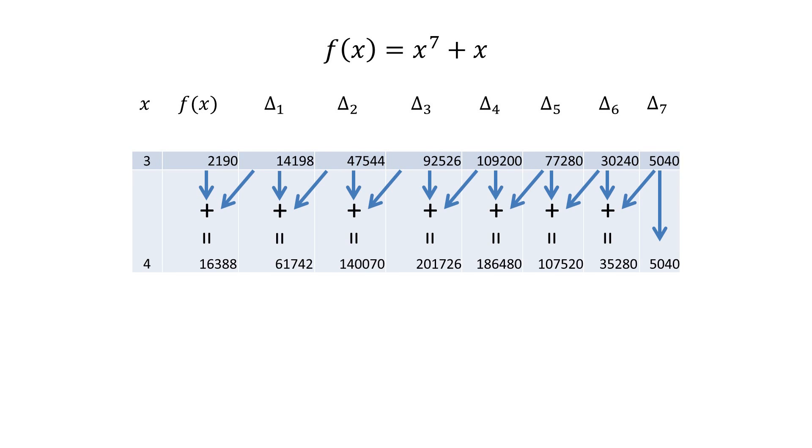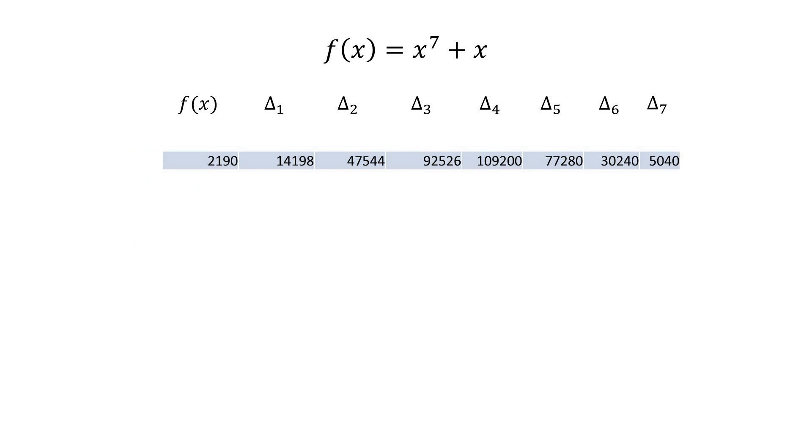And, if you order the calculation sequentially from left to right, you only need a single row of storage in your difference engine.